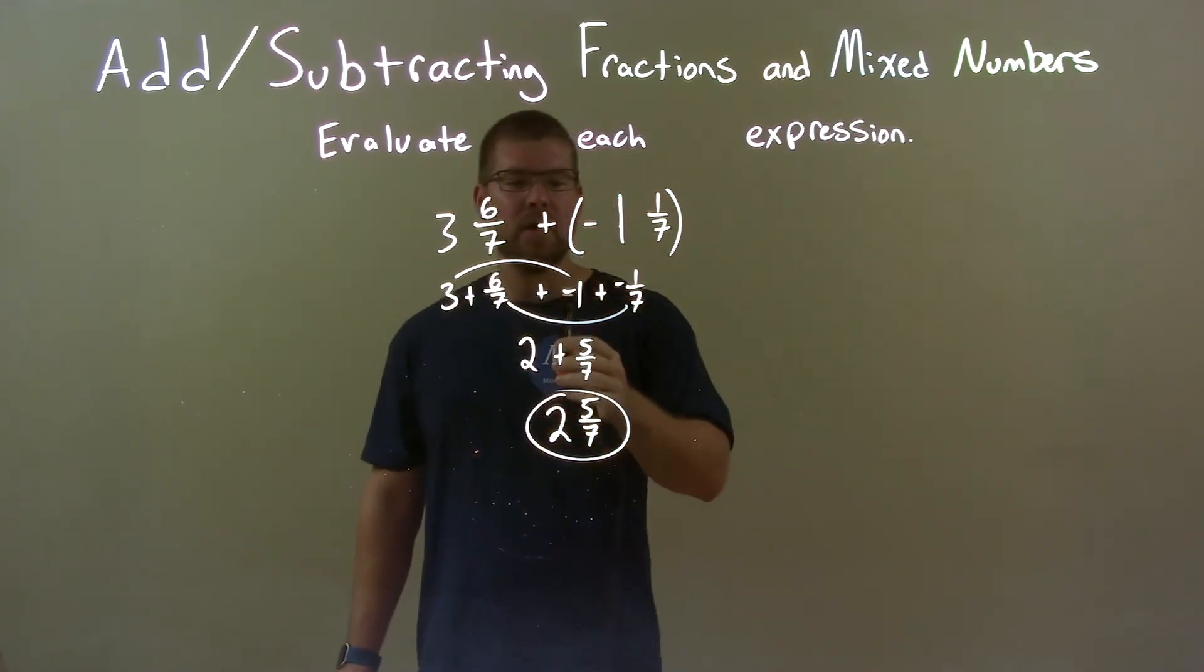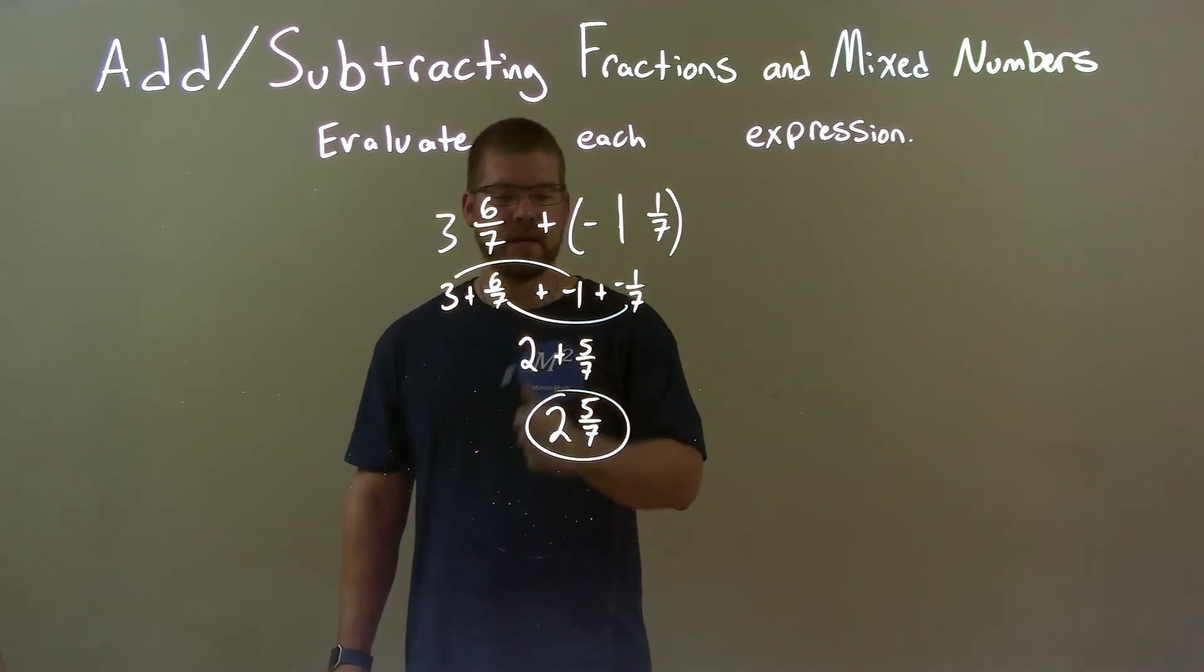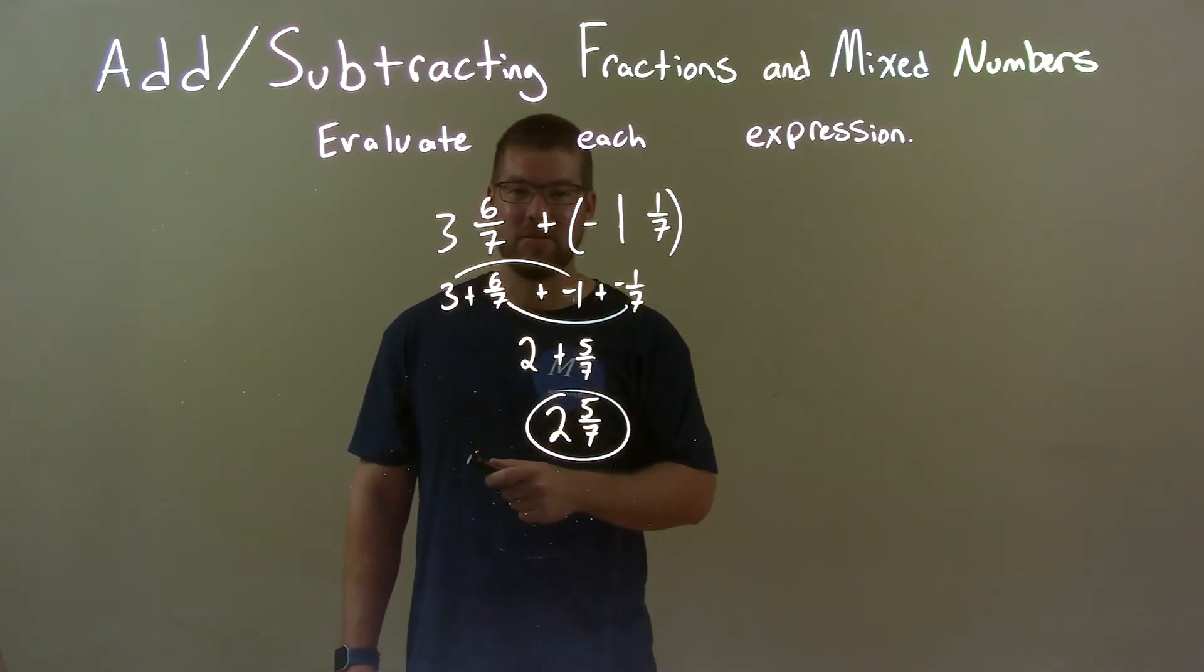Then we combined the whole numbers and the proper fractions. You get 2 plus 5/7. Combine those together for our final answer: 2 and 5/7.